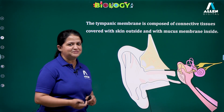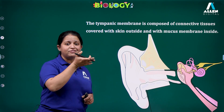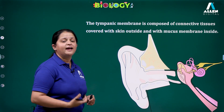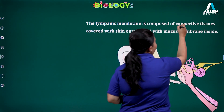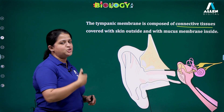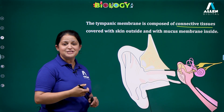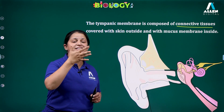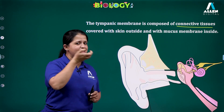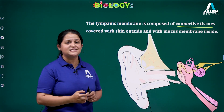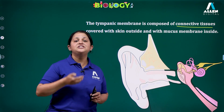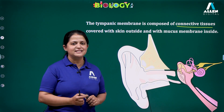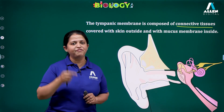The tympanic membrane is also termed as the eardrum. It receives sound waves through the external auditory meatus. The tympanic membrane is a type of connective tissue, composed of connective tissue covered with skin on the outer side and mucus membrane on the inner side. When it receives sound vibrations, it starts to vibrate, and those vibrations are channelized to the next part, the middle ear. So the external ear consists of the ear pinna, external auditory meatus, and the tympanic membrane.